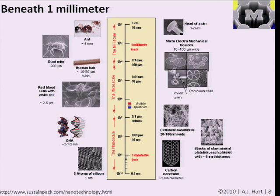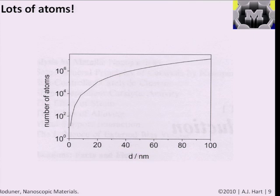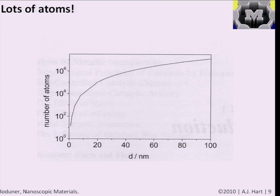You need a lot of atoms to put together to make even a small-scale structure. This graph shows the number of atoms based on a simple crystal model as a function of diameter in nanometers. Even something just 10 nanometers in diameter already has about 1,000 atoms — 10 to the 3. We very rapidly reach large numbers of atoms while still in a range where we see interesting effects of size on properties. The range of sizes in which properties change depends on the material and the structure.